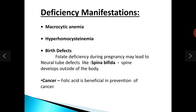Folic acid deficiency leads to macrocytic or megaloblastic anemia, and hyperhomocysteinemia where homocysteine levels are elevated in the blood. It also leads to birth defects during pregnancy — specifically neural tube defects in the fetus such as spina bifida, where the spine develops outside the body, and anencephaly. Cancer risk also increases since folic acid is beneficial in its prevention. The main deficiency manifestations are macrocytic anemia, hyperhomocysteinemia, and birth defects.